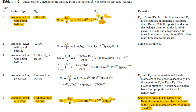Here is the first relation for the annular jacket. Remember that the helical coil is a special case of the annular jacket. The first relation is for turbulent flow with Reynolds number greater than 2100, and the second relation is for Reynolds number less than 2100.